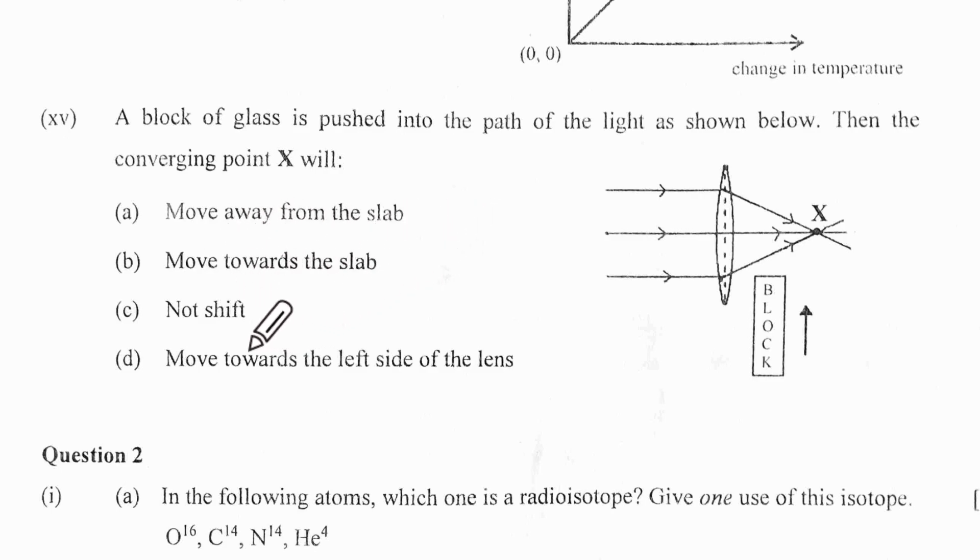Moves towards the slab - towards the slab means this way. X is not turning this way. It is moving away from the slab because X will be now here. It will undergo refraction and will be somewhere here. So the correct option is A. That finishes our MCQ.